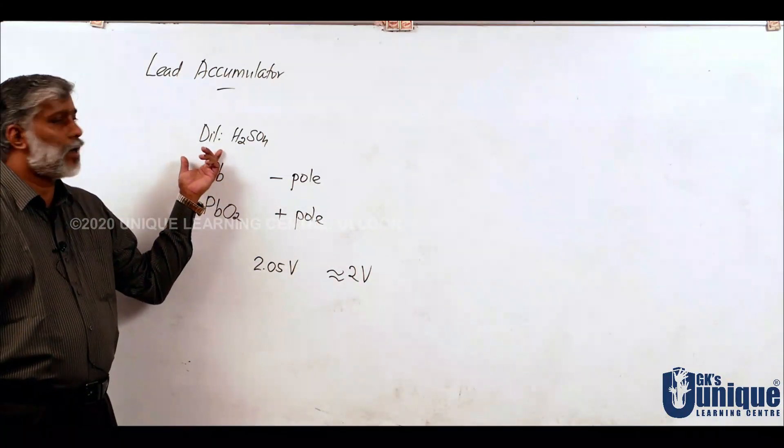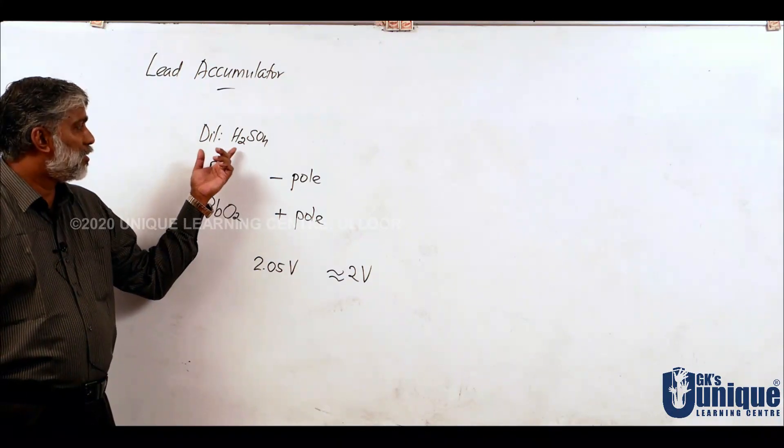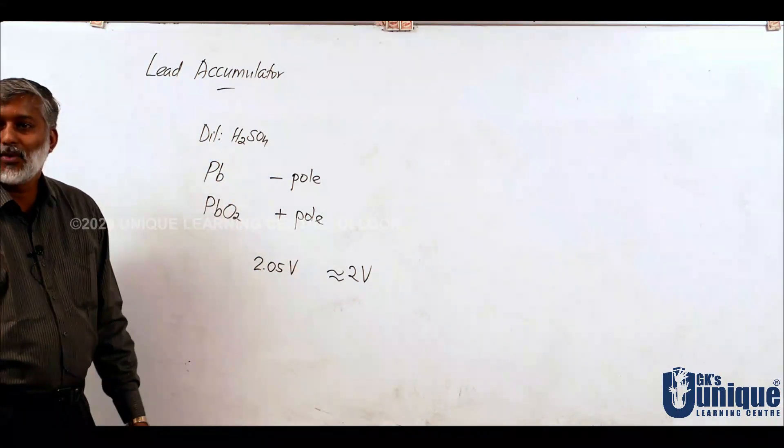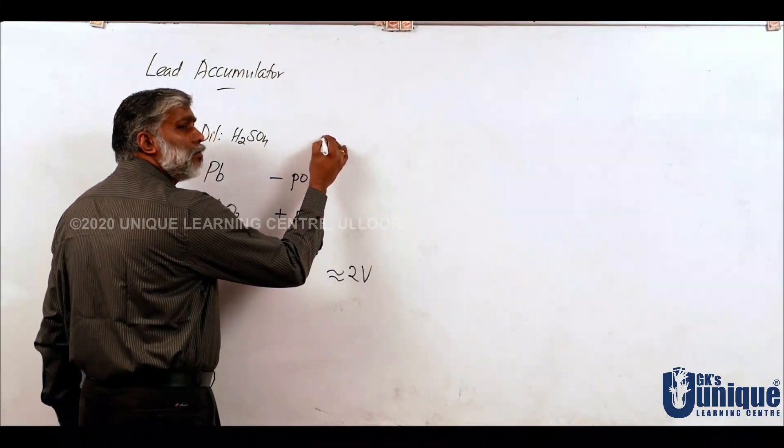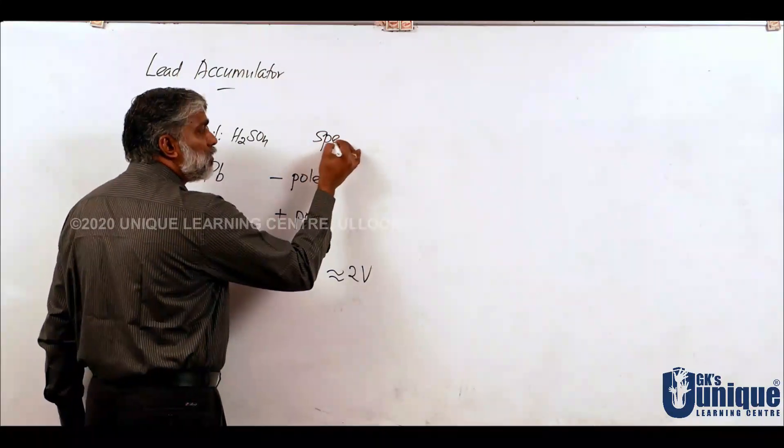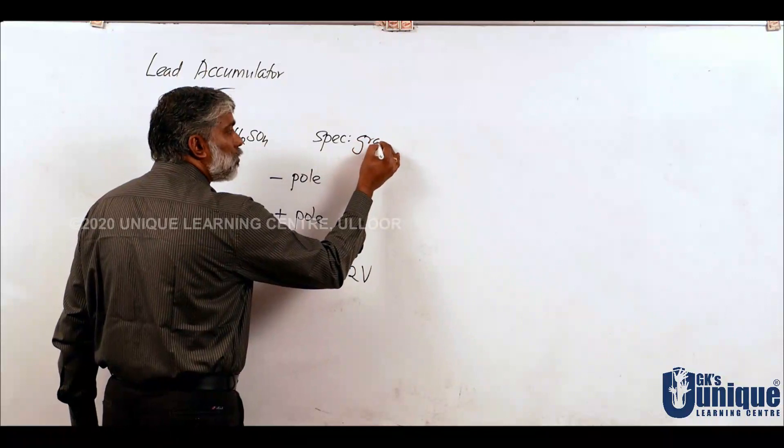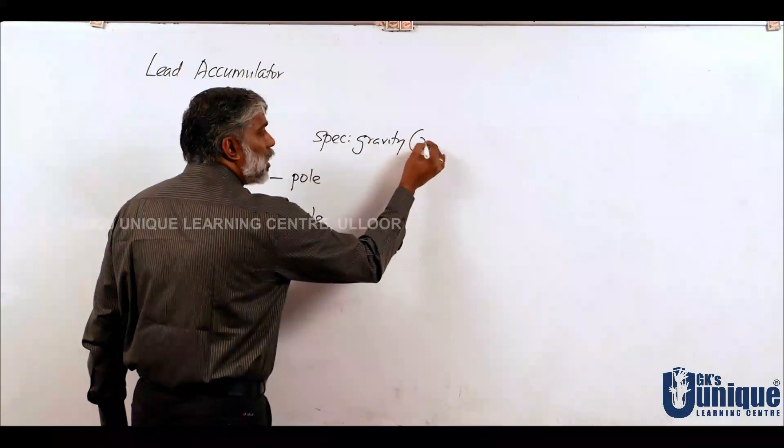In Lead Accumulator, Dilute Sulfuric Acid is used as electrolyte. Specific gravity, and specific gravity - relative...